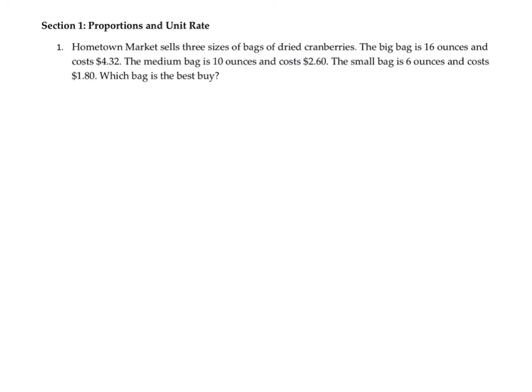Question number one. Hometown Market sells three sizes of bags of dried cranberries. The big bag is 16 ounces and costs $4.32. The medium bag is 10 ounces and costs $2.60. And the small bag is 6 ounces and costs $1.80. Which bag is the best buy? In this problem, you need to determine the unit rate for each to determine which is the actual best buy.